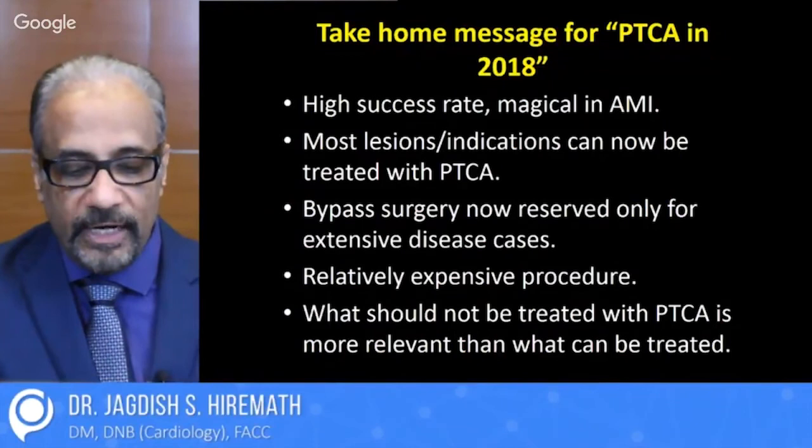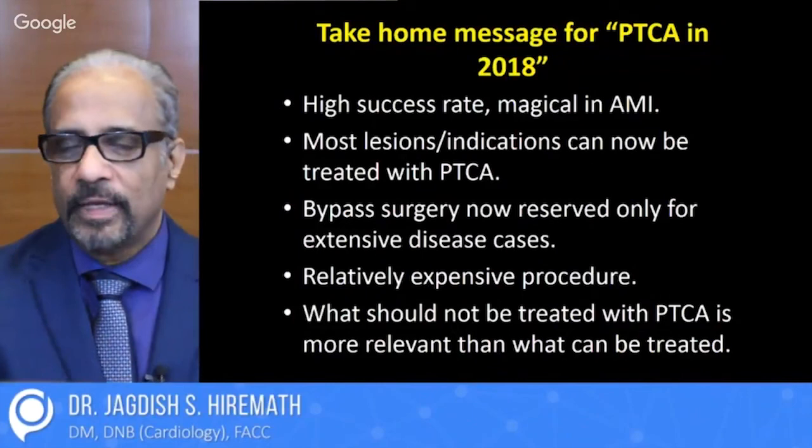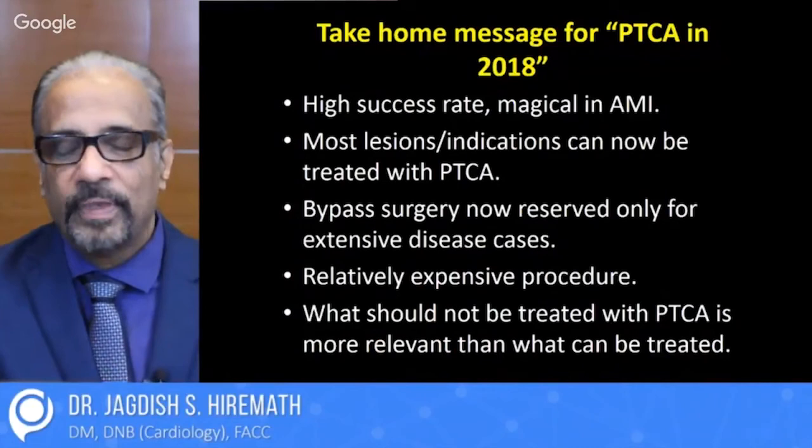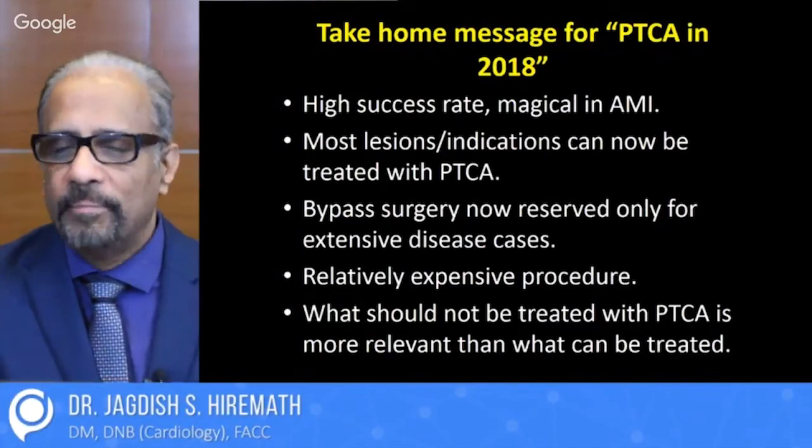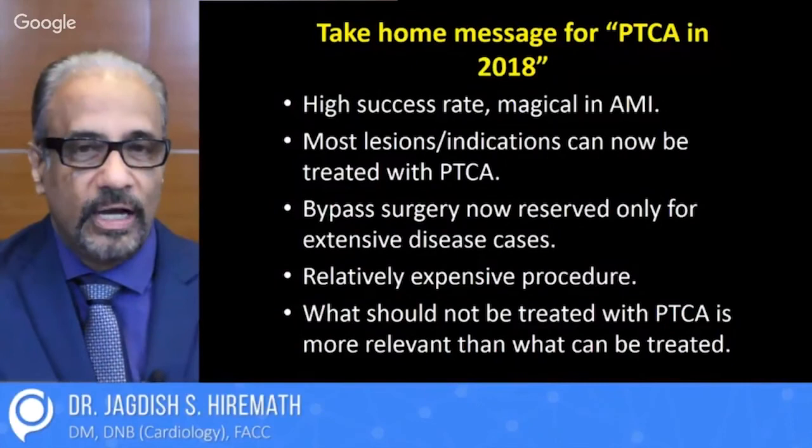Stent across the origin of a branch vessel — what is your opinion? Very comfortably can be done. If the branch vessel is not diseased, there are 4% chances of something going wrong. If the branch vessel is diseased, there are about 18% chances of something going wrong. But they can be tackled very easily, and an angioplasty worth its salt should know how to manage a side branch.